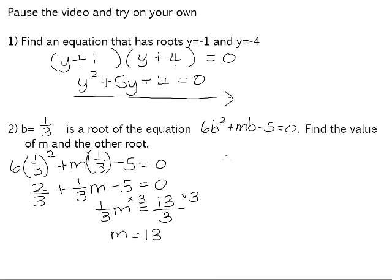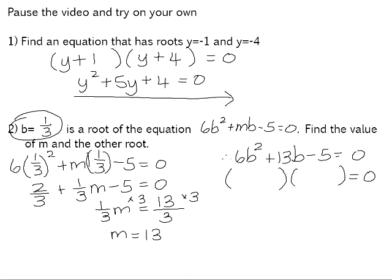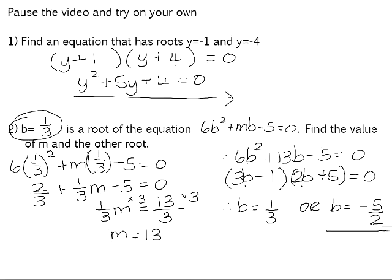So our equation is 6b squared plus 13b minus 5 equals 0. We need to find the other root by factorizing. We already know that one third is a solution, so 3b minus 1 must have been a factor, because equating 3b minus 1 to 0 and solving gives b equals one third. That means our second factor must be 2b plus 5, because 3b times 2b is 6b squared, and positive 3 times positive 5 is positive 15... giving b equals one third or b equals negative 5 over 2. So negative 5 over 2 is the other root.